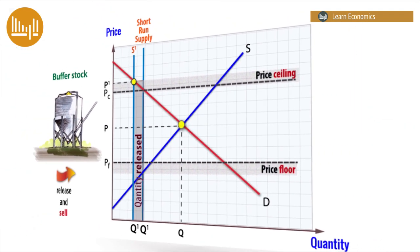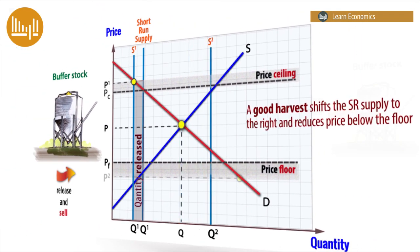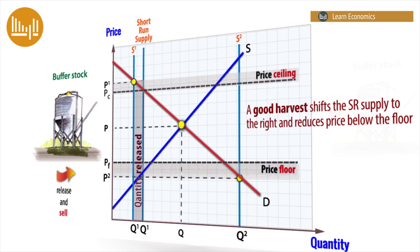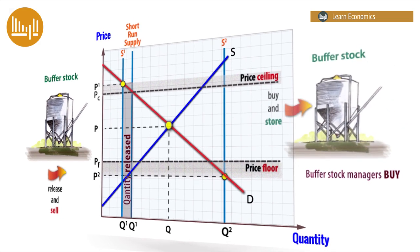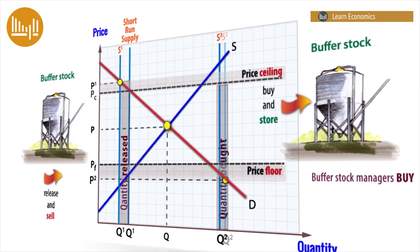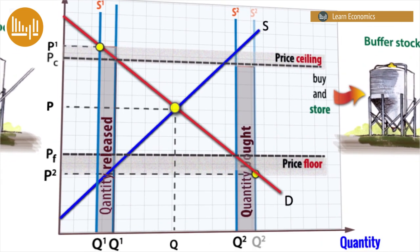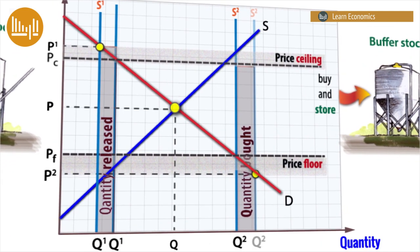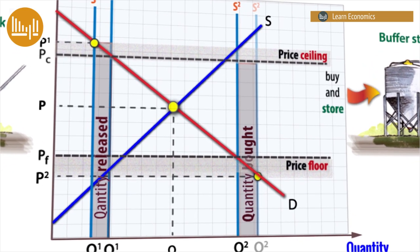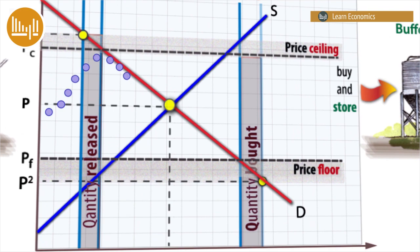Conversely, if there is an exceptionally good harvest, market price would collapse, so the buffer stock managers will buy up stocks and take them off the market. The extent of buying and selling depends upon the agreed range of price movements. Given the difficulty of establishing a completely stable price, some fluctuation is allowed, which enables market forces and the price mechanism to work alongside intervention.